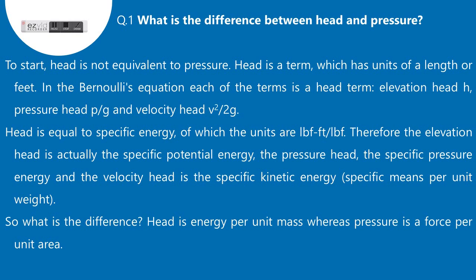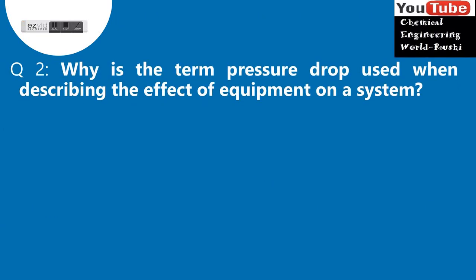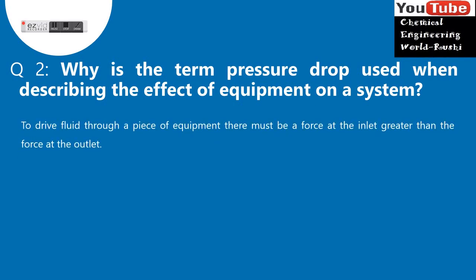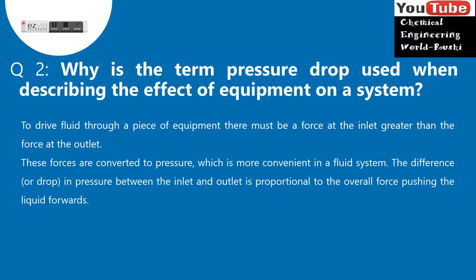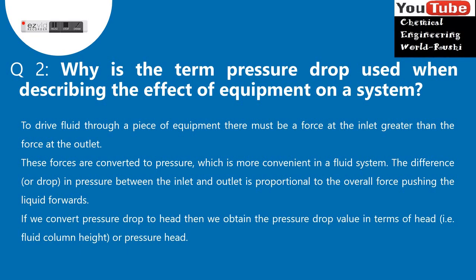Question 2: Why is the term pressure drop used when describing the effect of equipment on a system? To drive fluid through a piece of equipment, there must be a force at the inlet greater than the force at the outlet. These forces are converted to pressure, which is more convenient in a fluid system. The difference, or drop, in pressure between the inlet and outlet is proportional to the overall force pushing the liquid forwards. If we convert pressure drop to head, we obtain the pressure drop value in terms of head, that is fluid column height, or pressure head.